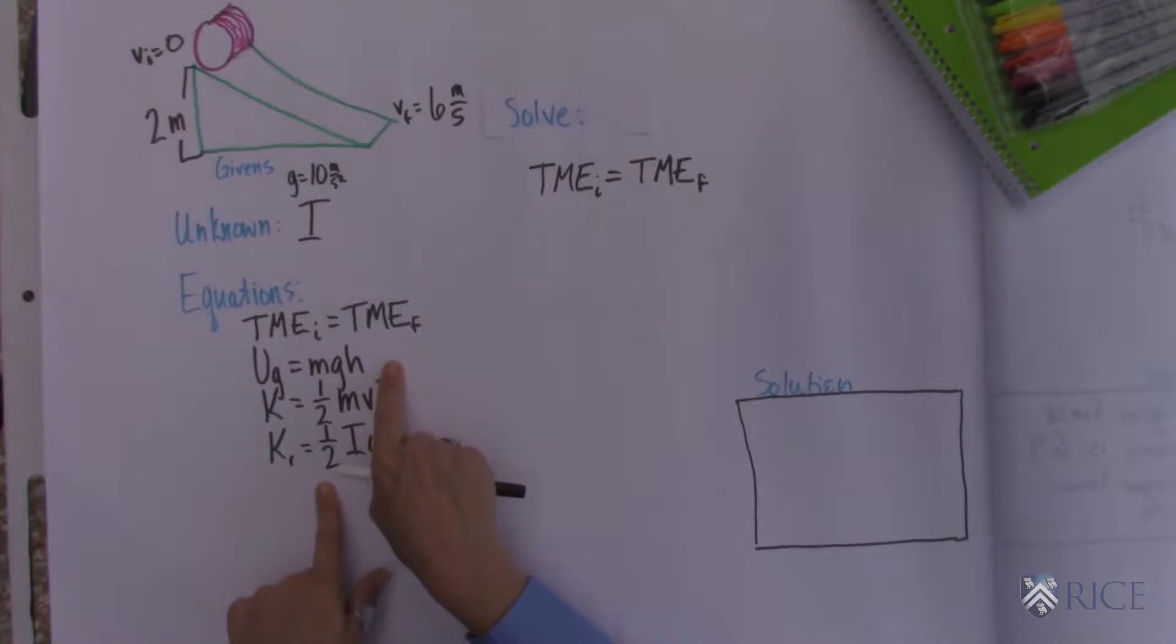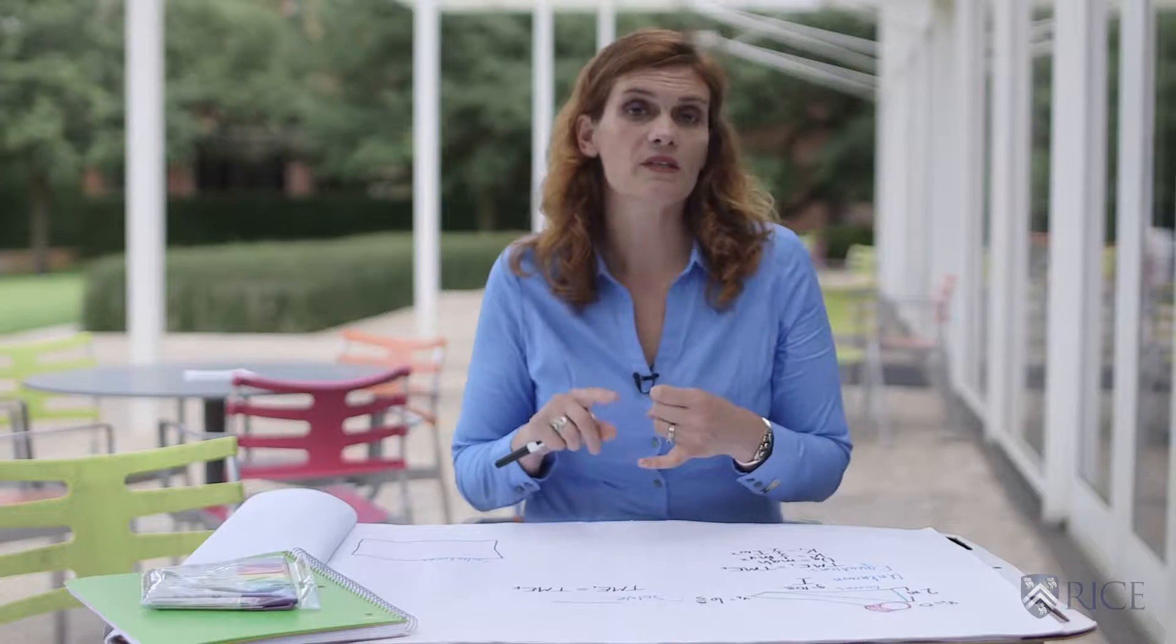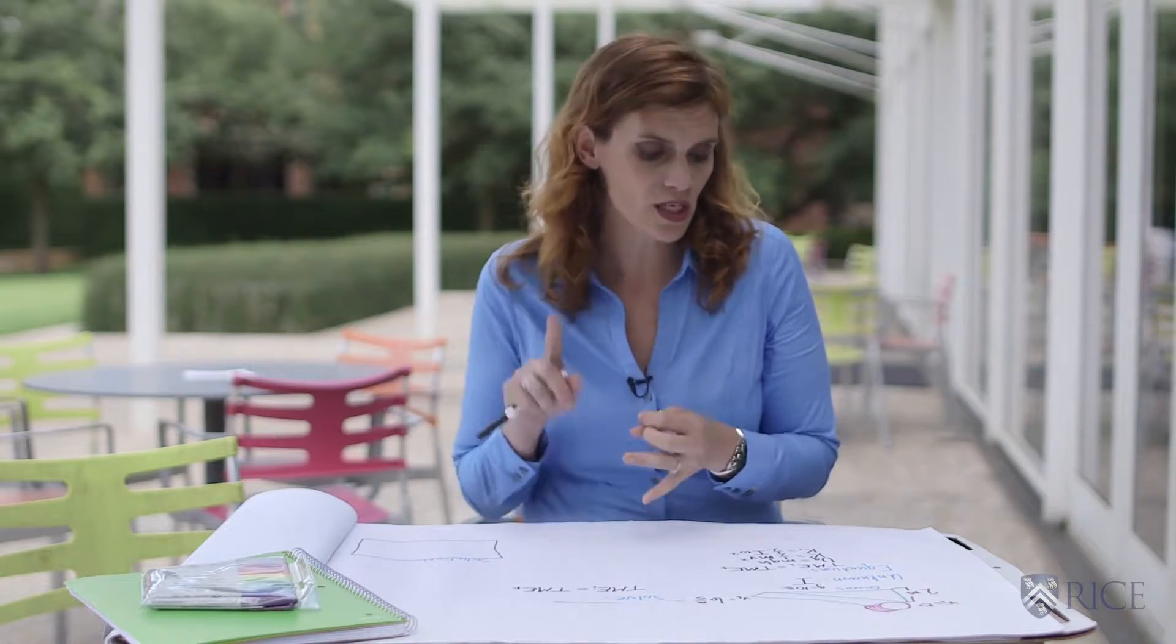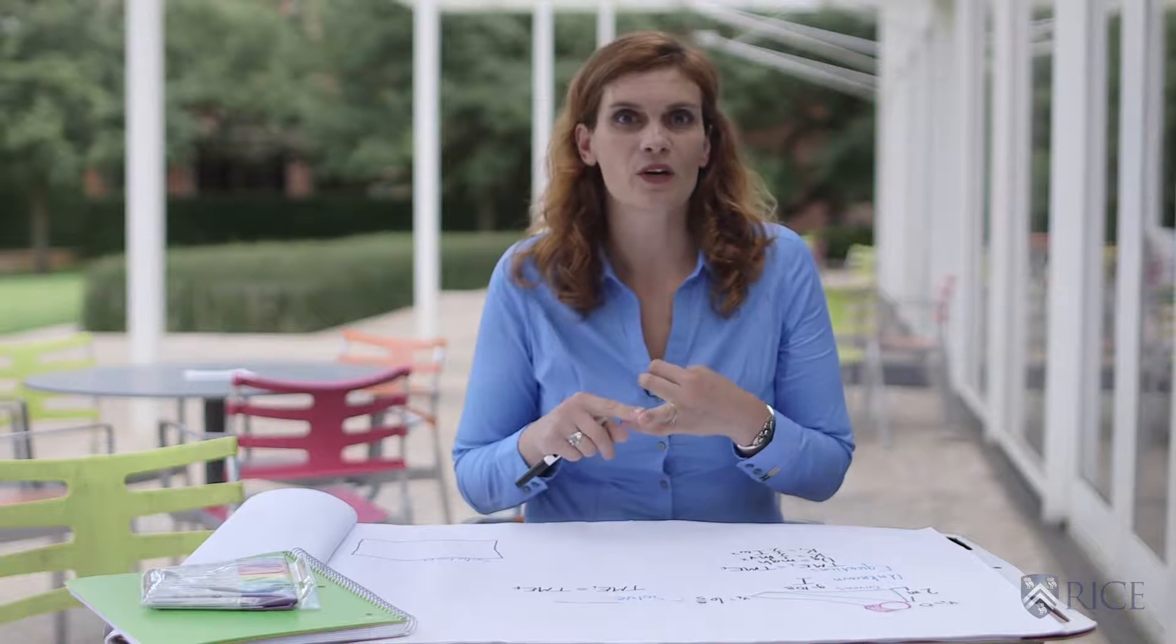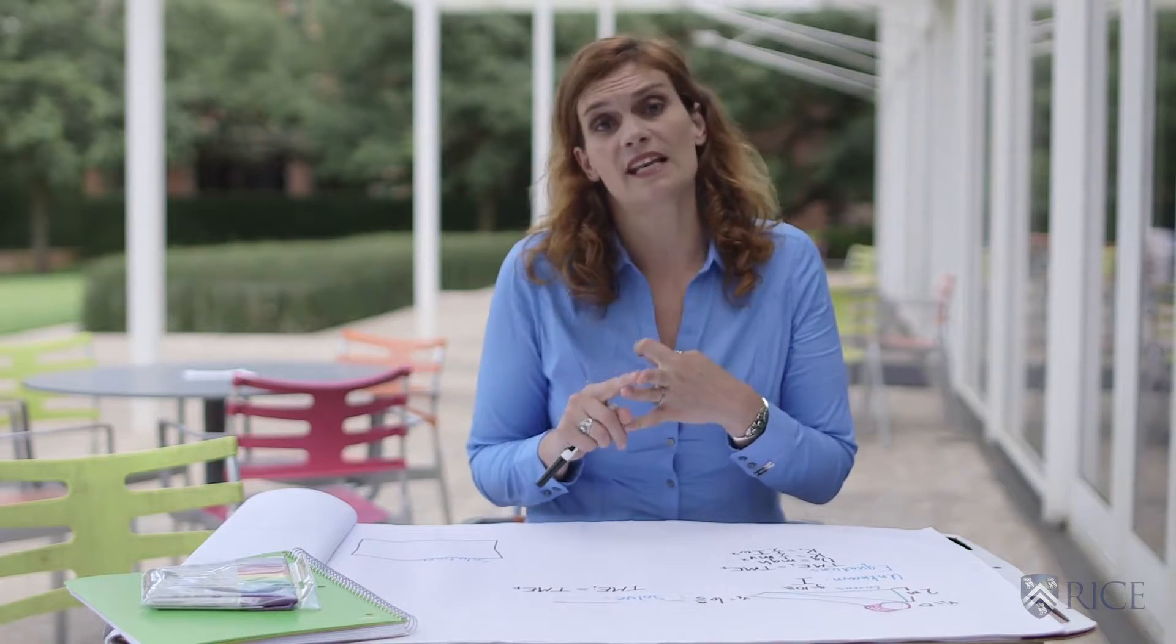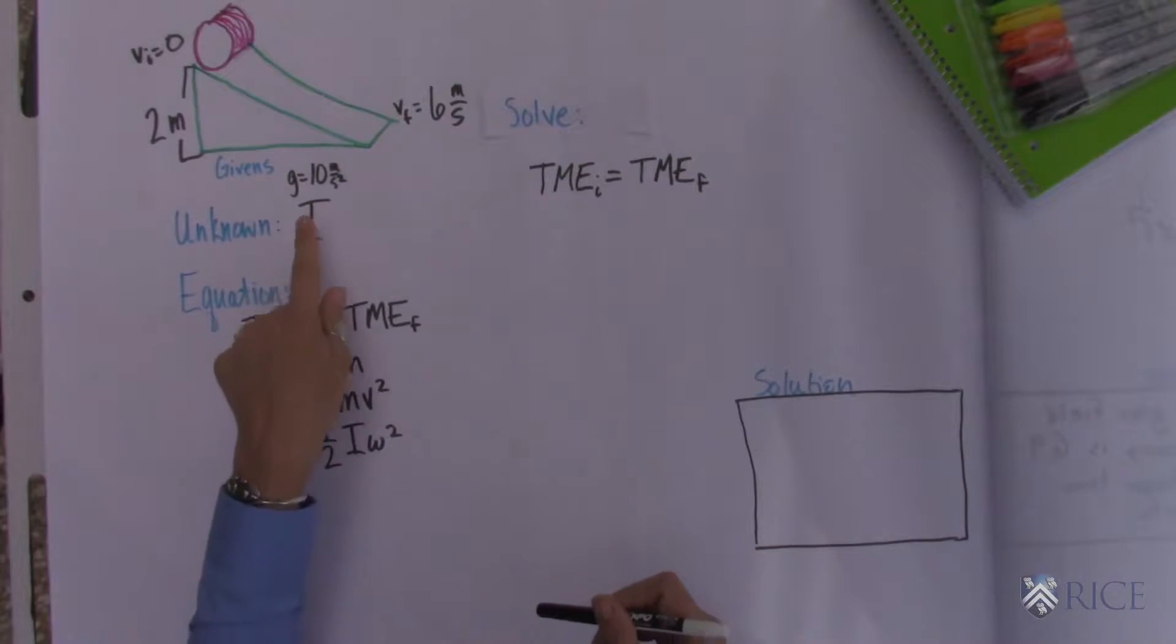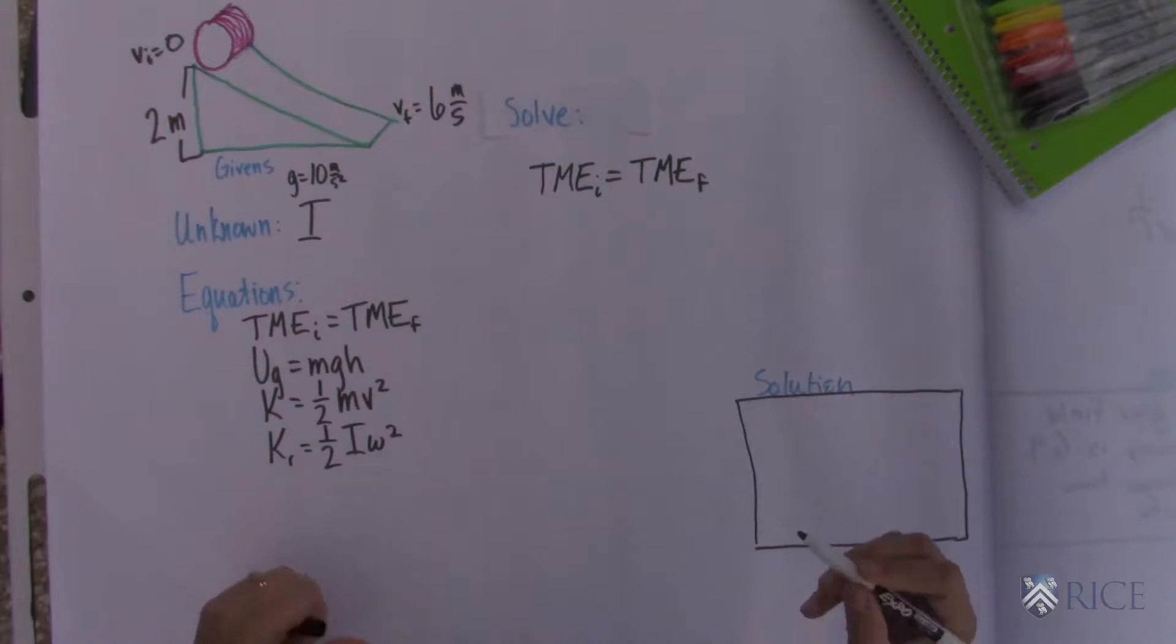We know that total mechanical energy initial equals total mechanical energy final. We know the formulas for gravitational potential energy. We know the formula for kinetic energy and the rotational kinetic energy. So let's get started. We also know that gravity, the acceleration due to gravity is 10.